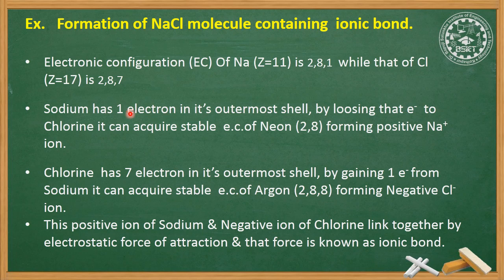Sodium's outermost shell configuration is 2, 8, 1. Chlorine has 7 electrons in its outermost shell. By gaining one electron from sodium, chlorine can acquire the stable electronic configuration of argon, which is 2, 8, 8 — completing its octet.